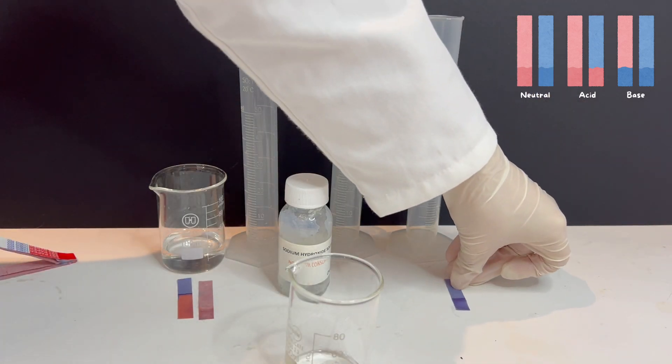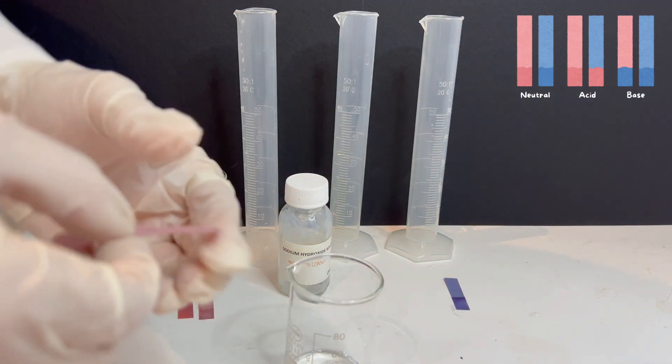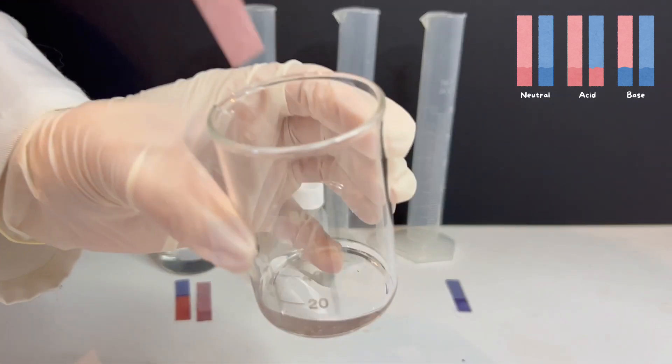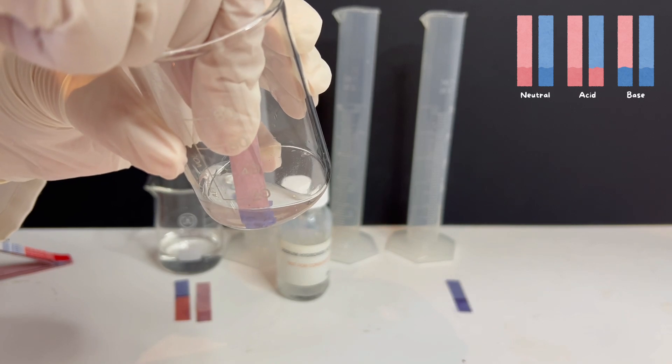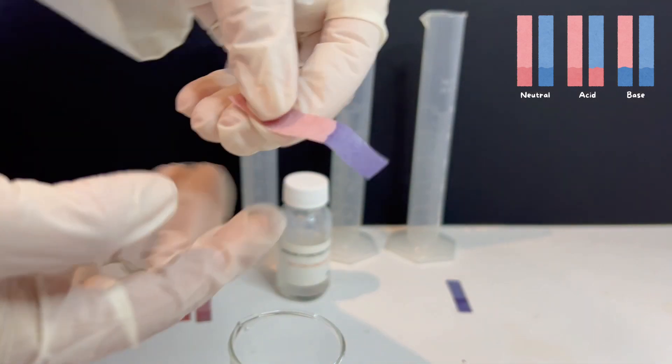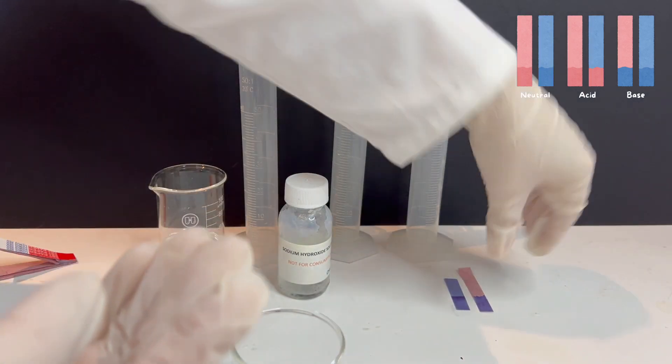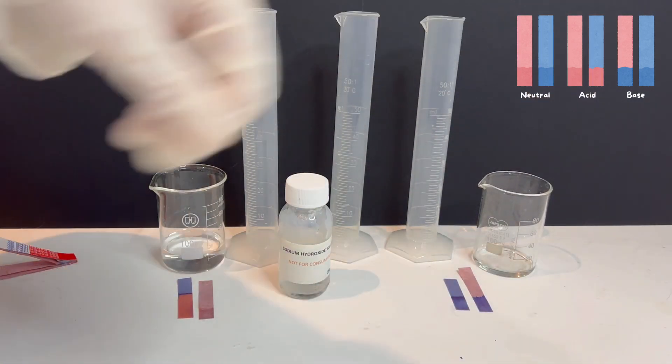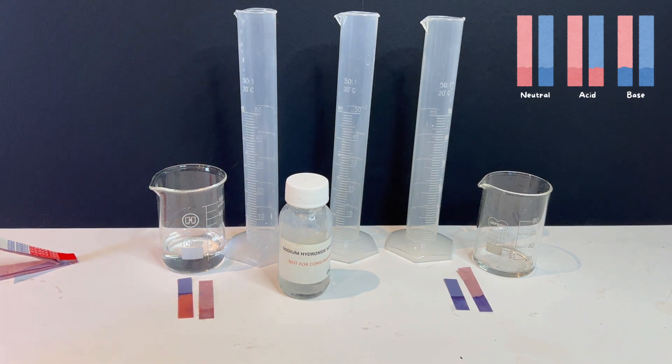Now, I dip the red litmus paper into the sodium hydroxide solution. This time, the red litmus paper turns blue. That confirms that sodium hydroxide is a base or alkaline substance. Bases produce hydroxide ions in water, which reacts with the dye in the litmus paper and change its color to blue.